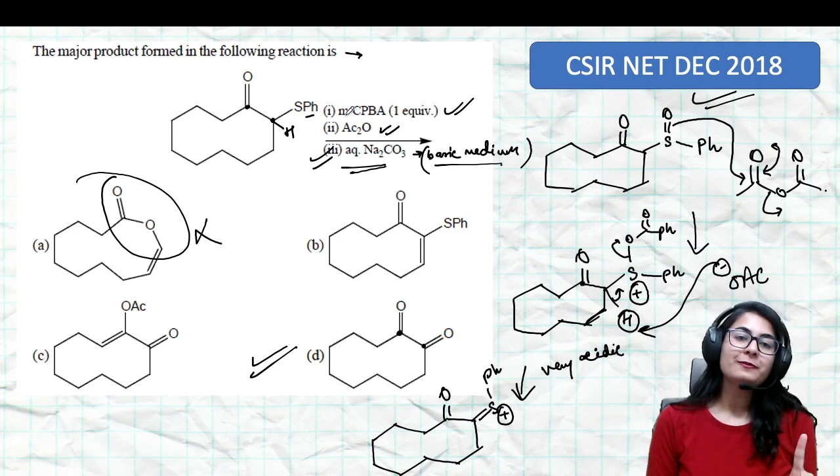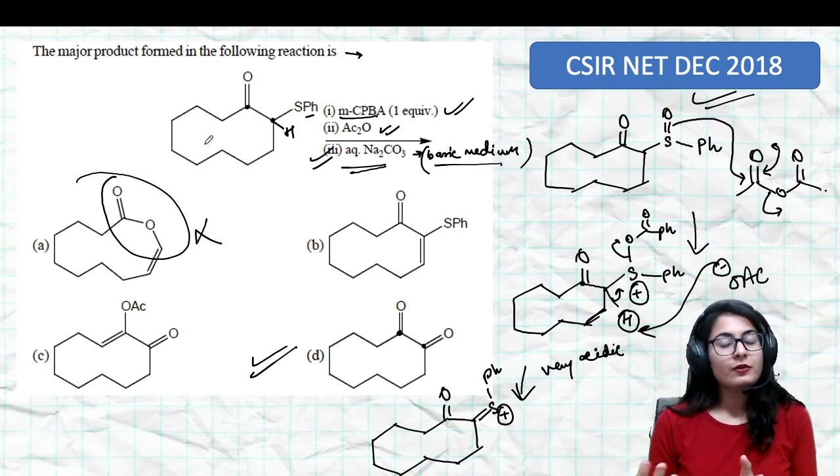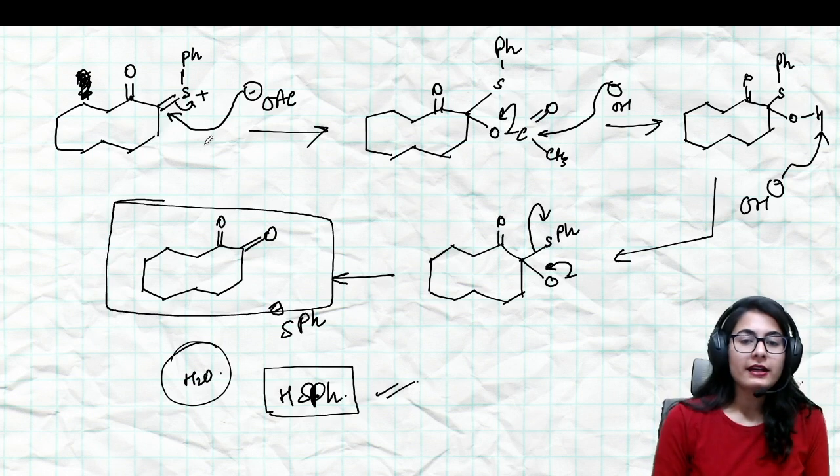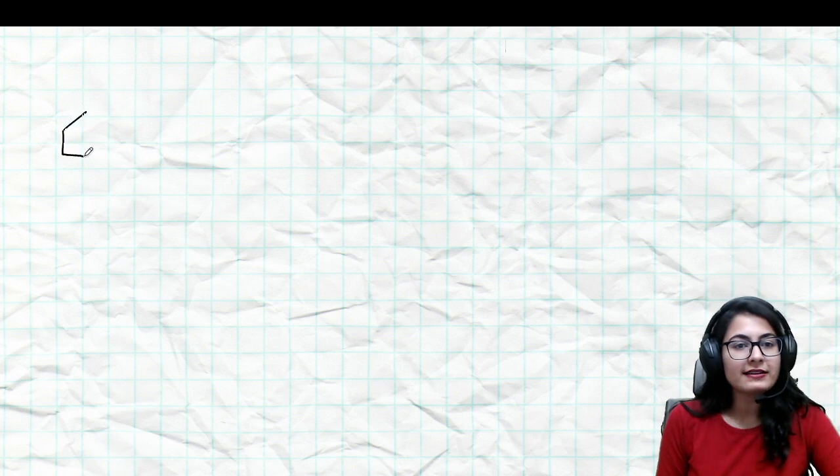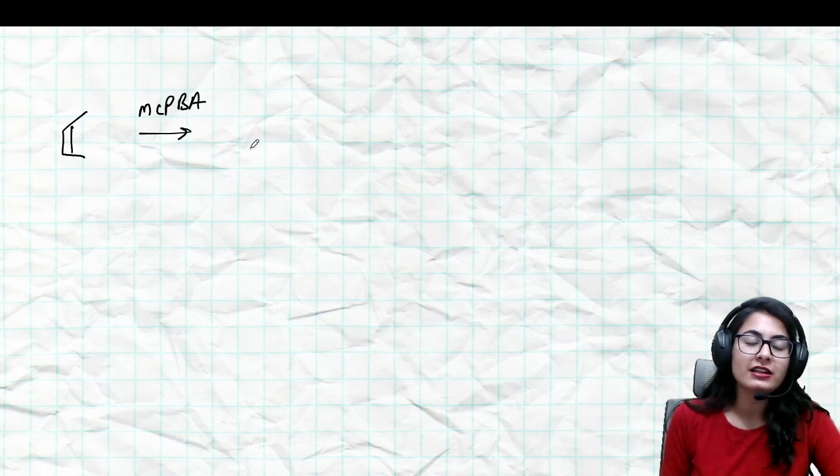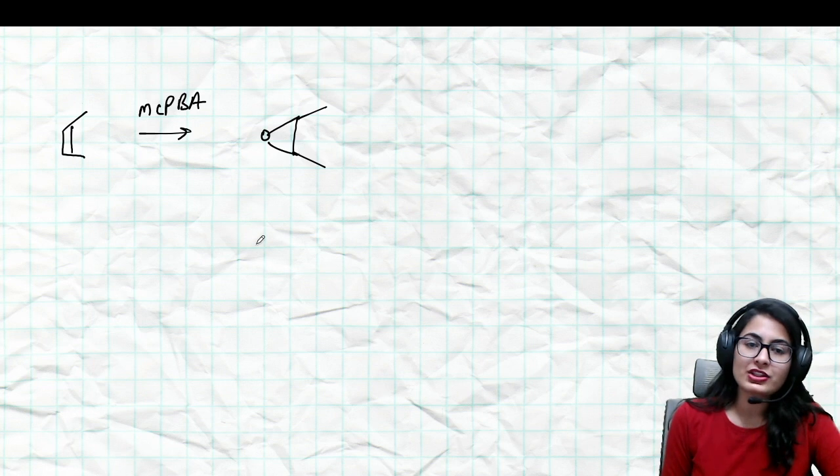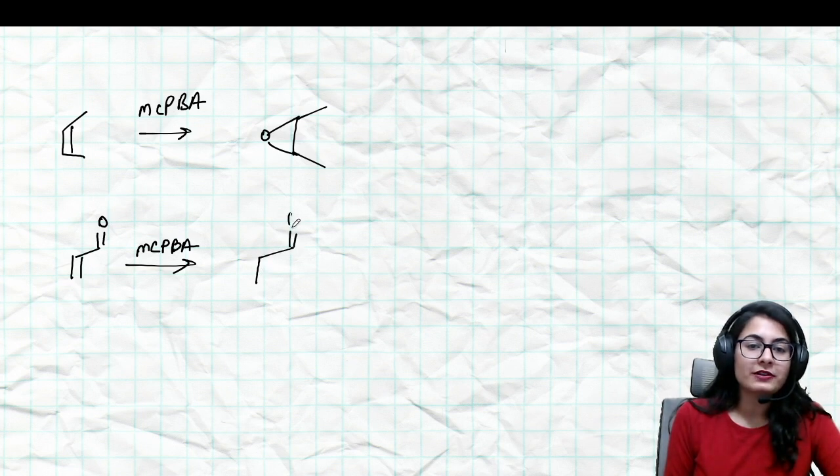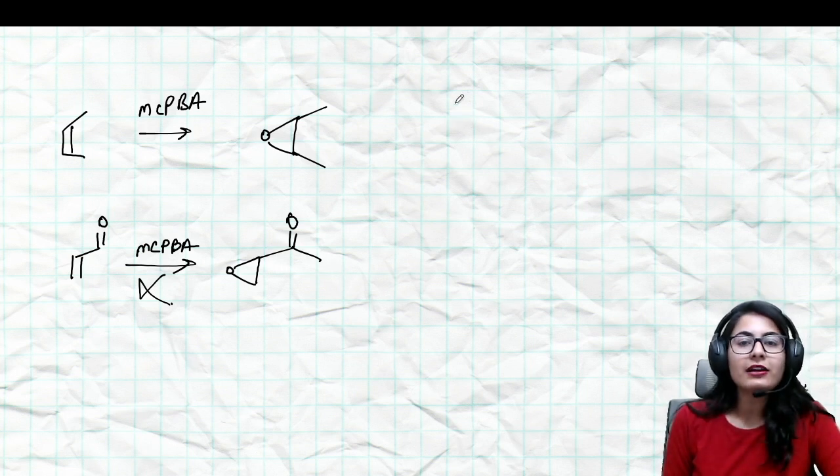You must also know how you're going to use your reagents. Metachloroperbenzoic acid has three major uses: if you have a simple alkene, metachloroperbenzoic acid will always epoxidize an electron-rich alkene. But if you have an enone system, metachloroperbenzoic acid is not going to give you this kind of epoxide, never, because it transfers an electrophilic oxygen.